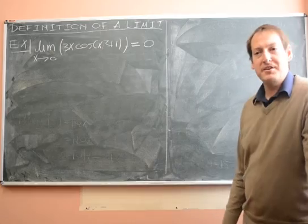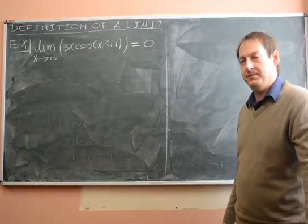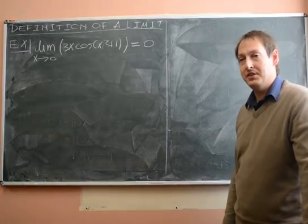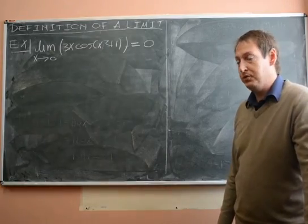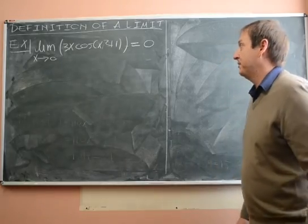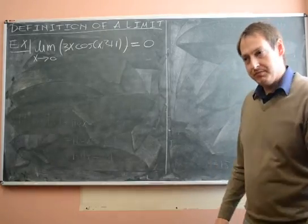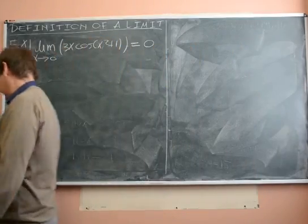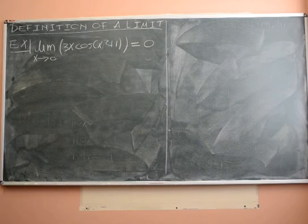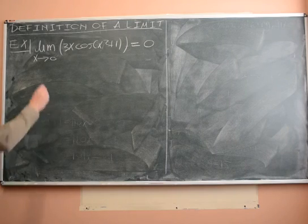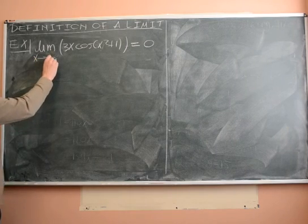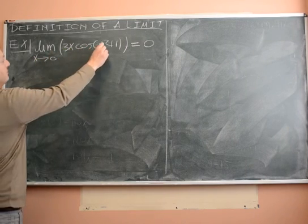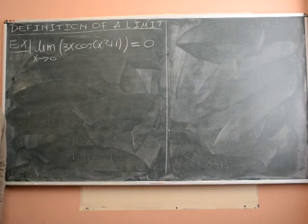Alright, so let's look at another example where we use the definition of a limit to prove that a certain limit equals some value. In this example, what we're going to do is prove that the limit as x goes to 0 of 3x cos of x squared plus 1 is equal to 0.